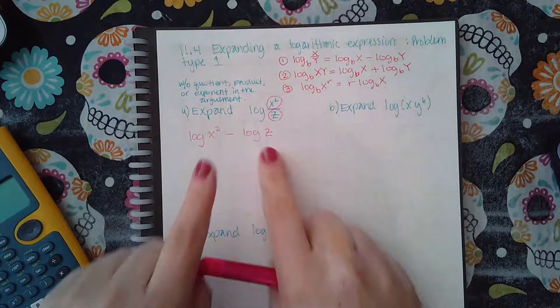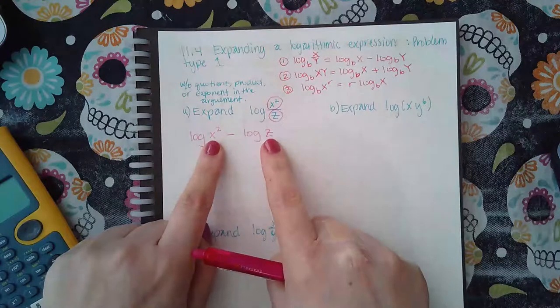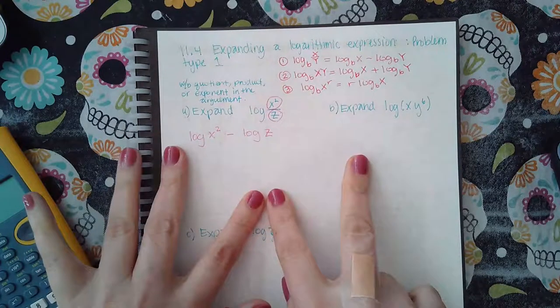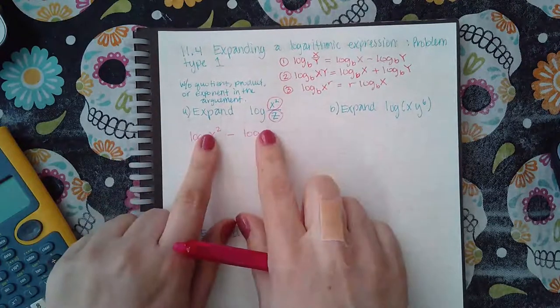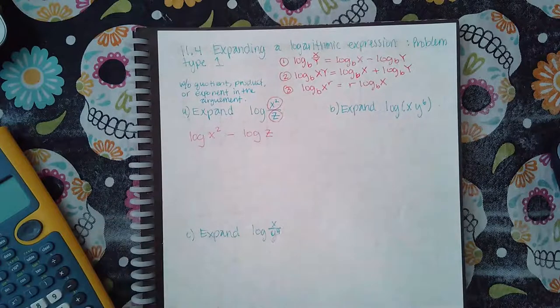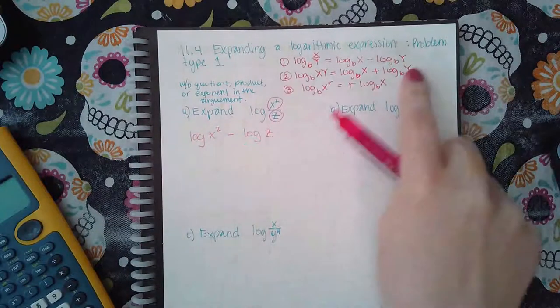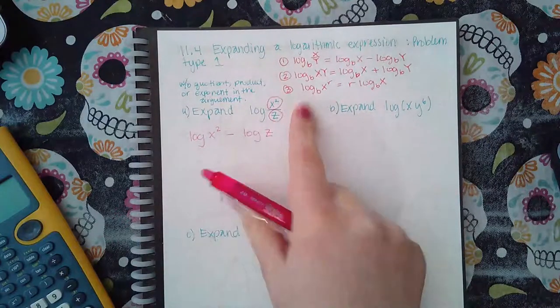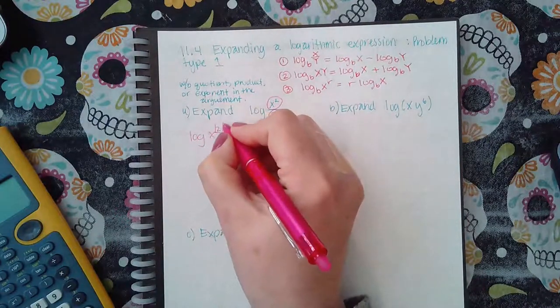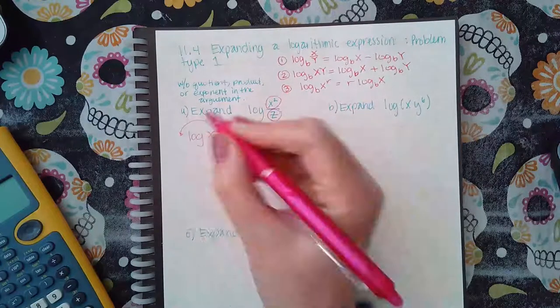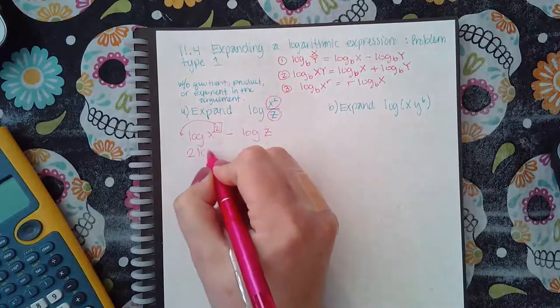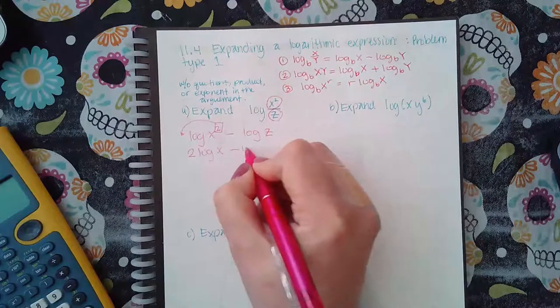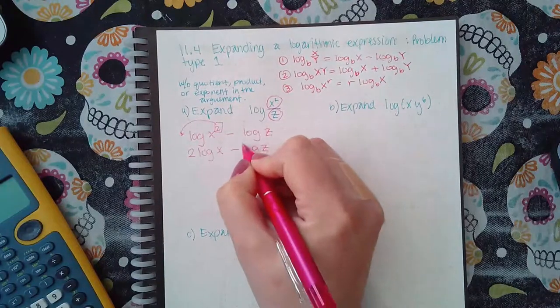Then if I had any products within these two logs, I would separate those products as well, but these are just one single base, so there's no products. So I don't have a step two in this problem here. But I do have an exponent, so I do have a step three. Step three is basically to take that exponent and bring it to the front.